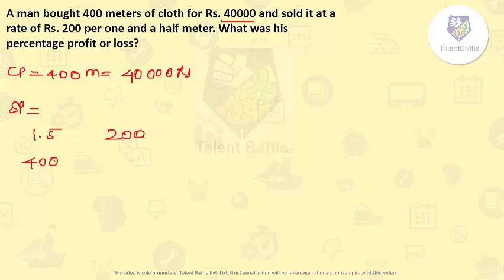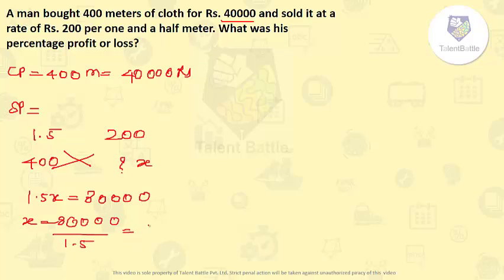So the total there are 400 meters. So what is going to be the total selling price? By cross multiplying we will be getting, let us consider this as X. 1.5 X is equals to 80,000. So X will be Rs. 80,000 upon 1.5. By solving this we will be getting X as Rs. 53,333.33.